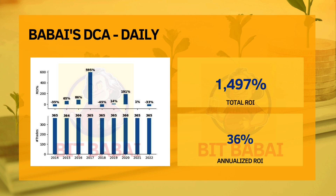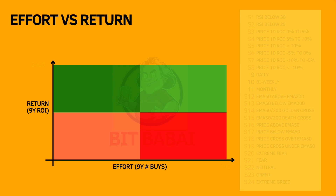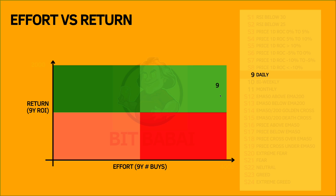That 36% annualized ROI is a lot. Just for context, the S&P 500 returned 12.5% annualized over the last 10 years, so Bitcoin did three times better. Nasdaq returned 13.5% annualized over the same period. Now looking at where the daily strategy fits on the effort versus return chart — it falls in a moderate quadrant. The effort is high, possibly the highest, because you need to buy Bitcoin every single day manually. The return is moderate. Let's see if the next strategies can beat daily.